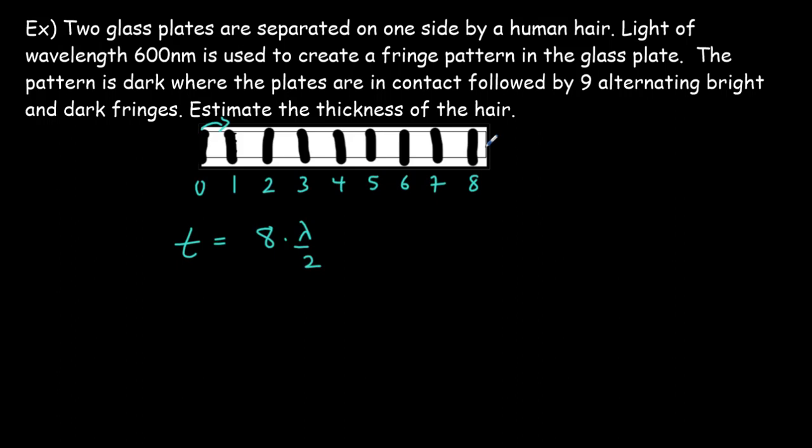And if we assume that the hair was right here at the edge, that would not quite be at the next dark fringe. We should probably add on an extra quarter of a wavelength just to make a better estimate. So we'd get a thickness there of 4.25 lambda or 4.25 times 600 nanometers.